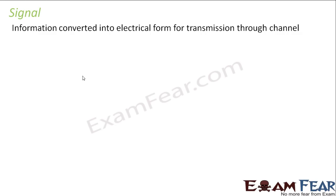The signal then gets converted into electrical signals which are capable of transmission. These electrical signals are either in the form of voltage or current. Information can be in three different forms — audio, video, or data — but it gets converted into electrical signals so that it is capable of transmission through the channel from transmitter to receiver.